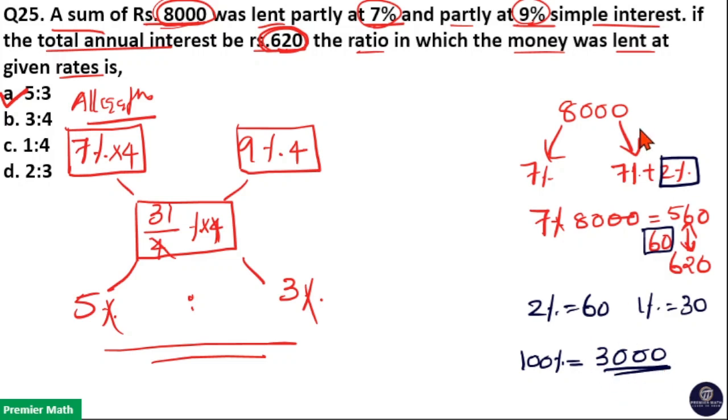That means this 3000 is the 9 percentage part. So sum is 3000. One part lent is 3000 rupees. Then 8000 minus 3000 is the other part, which is equal to 5000 rupees. If you take the ratio between 5000 and 3000, which is equal to 5 is to 3. So in this way you can also find the answer.